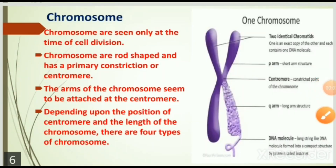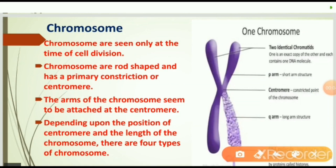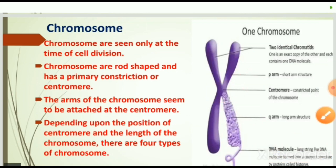Looking at the chromosome figure: we see two identical chromatids, the p-arm, the centromere, the q-arm, and the DNA molecule. Chromosomes are seen only at the time of cell division. They are rod-shaped and have a primary constriction or centromere. The arms of the chromosome appear attached at the centromere. Depending on the position of the centromere and the length of the chromosome, there are four types of chromosomes.